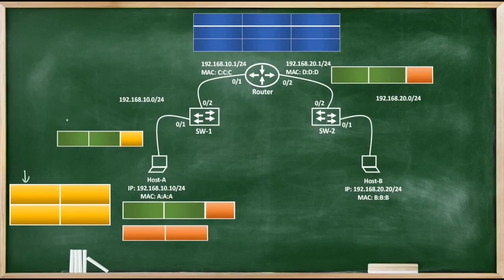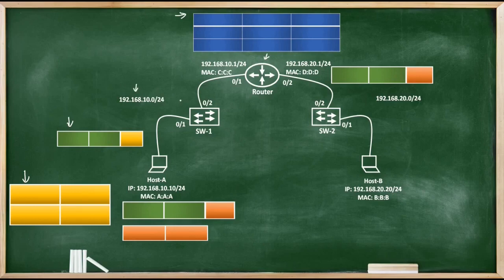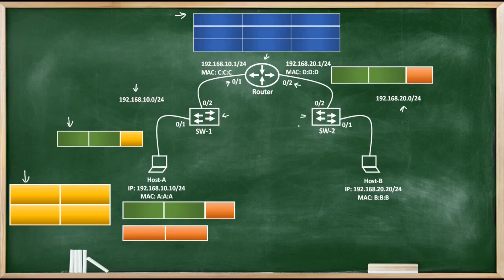Consider this diagram. For now don't bother about these empty boxes and tables as we will be filling them during this video. Here we have a router, and by definition a router connects various networks. For this example we have two networks: 192.168.10.0/24 connected to the 0/1 interface, and 192.168.20.0/24 connected to the 0/2 interface. The job of the router is to switch packets between networks. Each network has a single switch — the left side network has Switch 1 connected to Host A, and the right side network has Switch 2 connected to Host B. Both switches are also connected to the router.